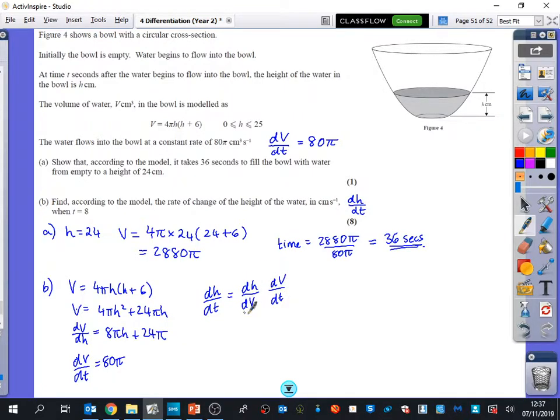Do I know exactly what dh/dv is? No. I have to do 1 over that. So I'm going to have 1 over 8πh plus 24π multiplied by dV/dt, which is 80π. Is there anything that you can see that can happen here straight away? Yeah, the π's can cancel out. So let me just do that.